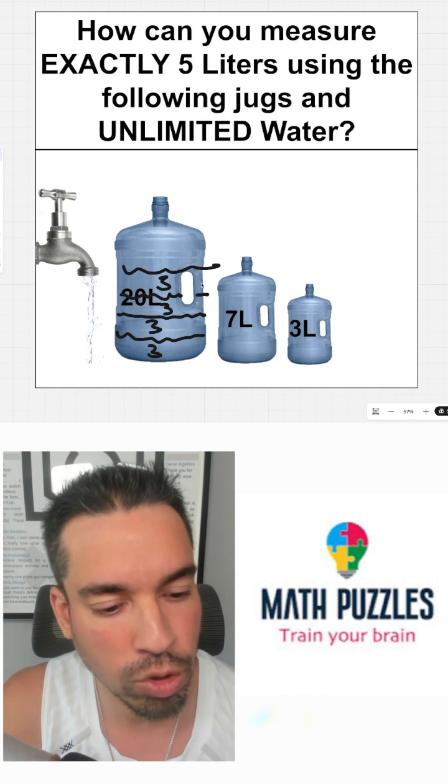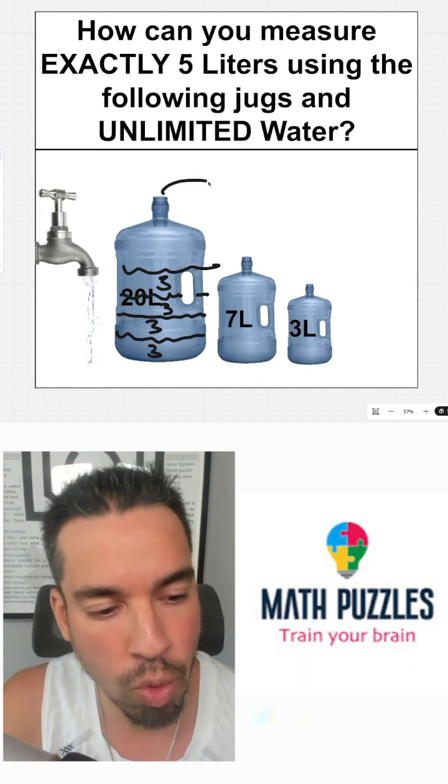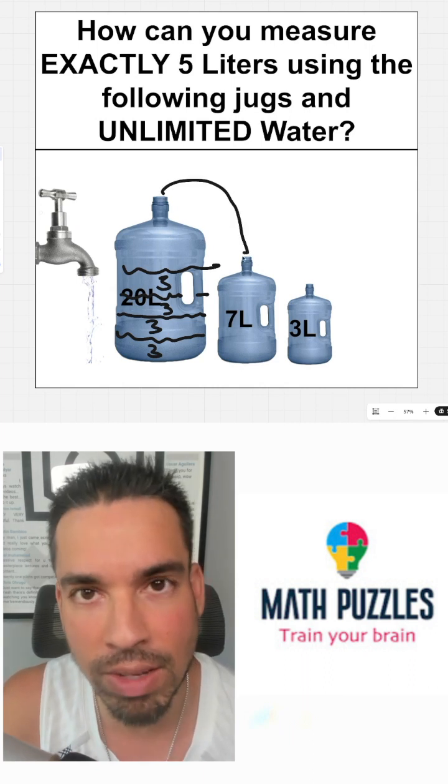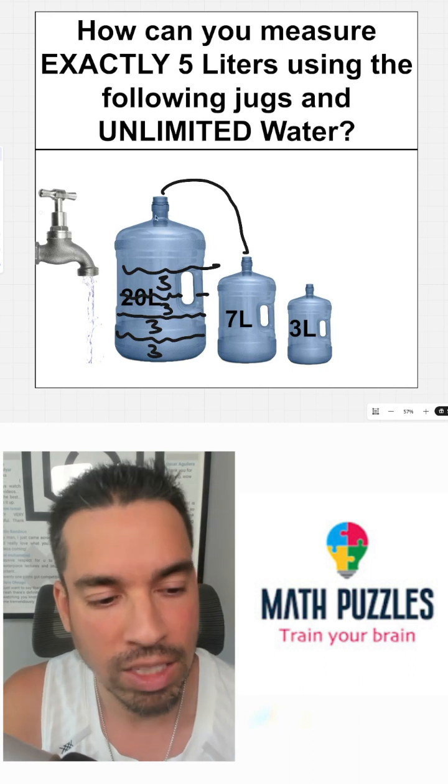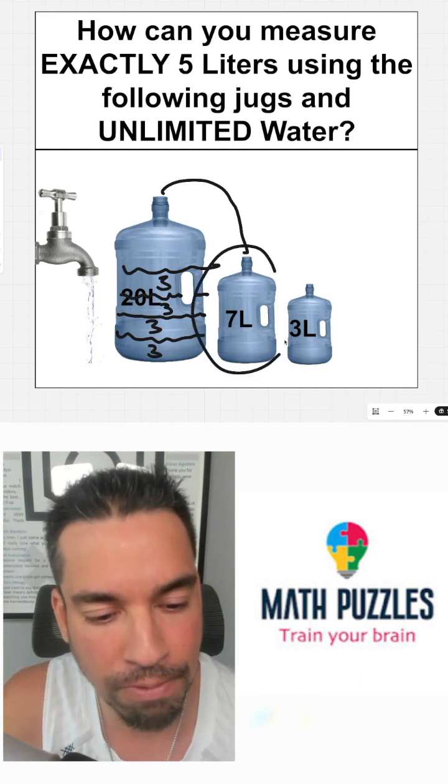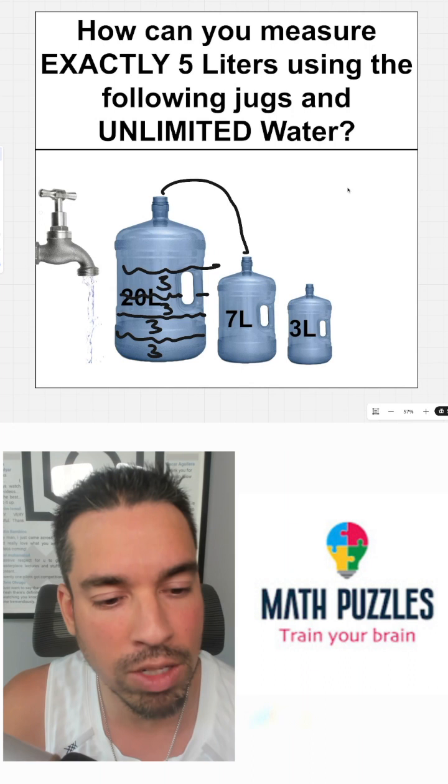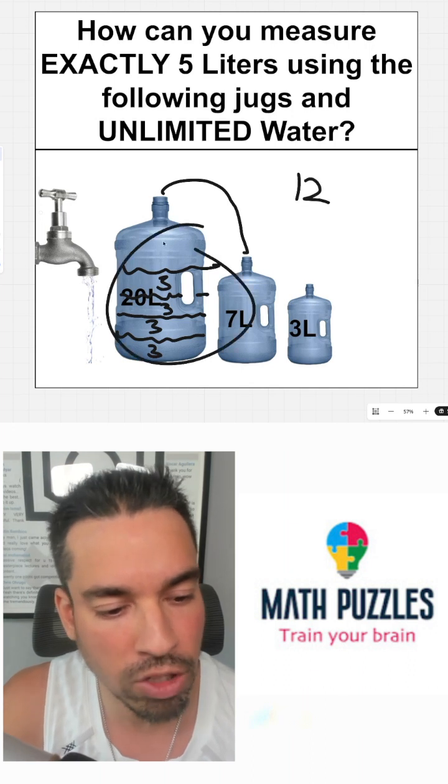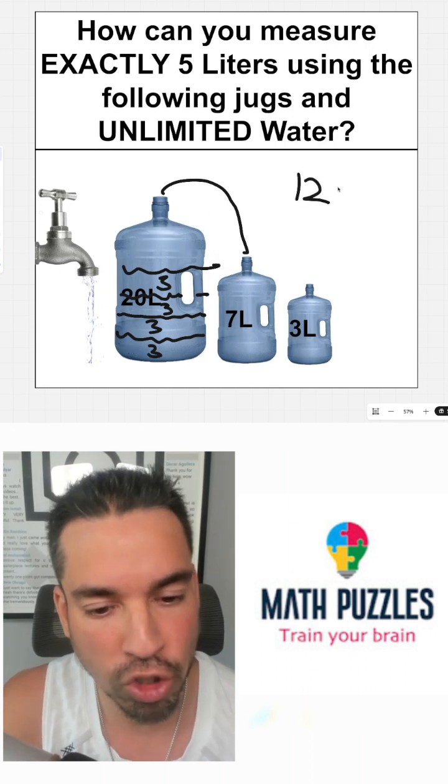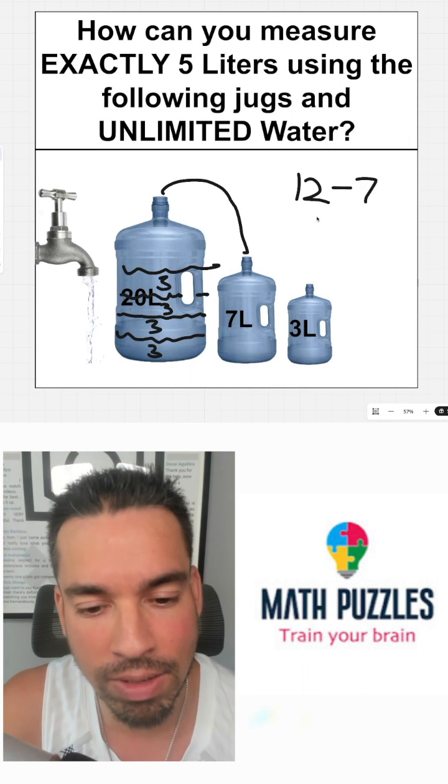So now that I've got 12 liters, what I'm going to do is I'm going to pour this out into the seven liter and I'm going to pour out as much water as I can until I fill this to the brim. So what am I doing? I'm taking my 12 liters that are in here and I'm subtracting exactly seven liters.